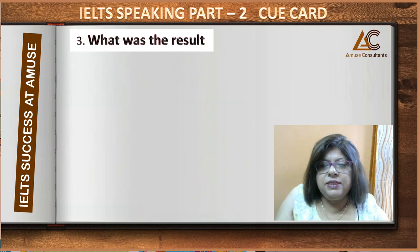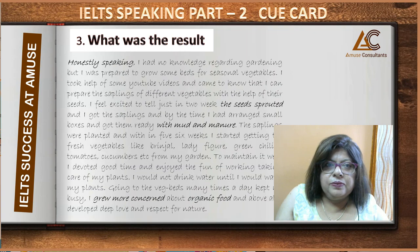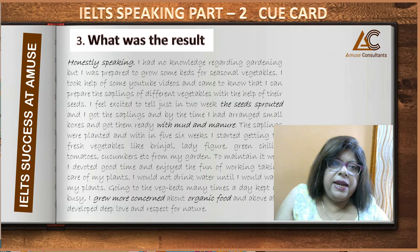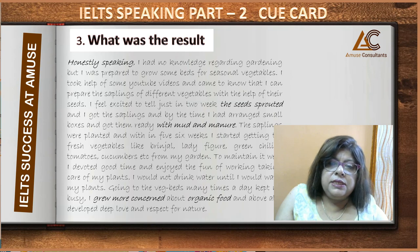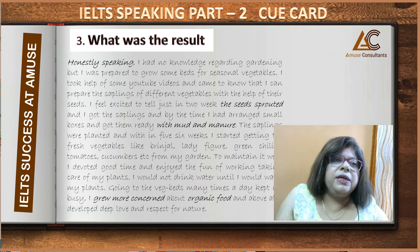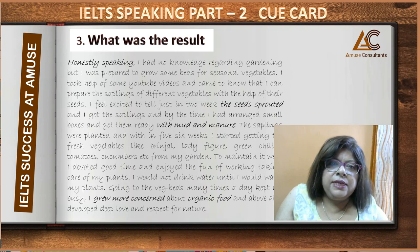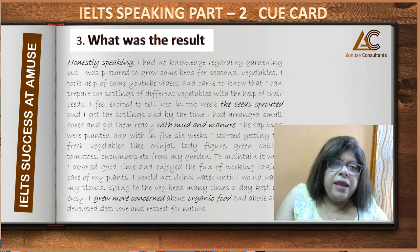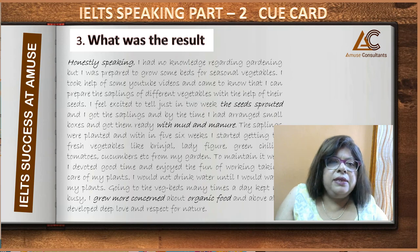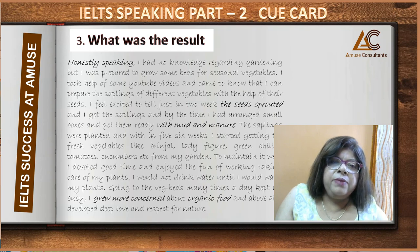Our third cue is: what was the result? Honestly speaking, I had no knowledge of gardening, but I was prepared to grow some beds of seasonal vegetables. I took help from YouTube videos and came to know that I could prepare saplings of different vegetables from their seeds. I feel excited to tell that just in two weeks, the seeds sprouted and I got the saplings. By that time, I had arranged small boxes and got them ready with mud and manure.